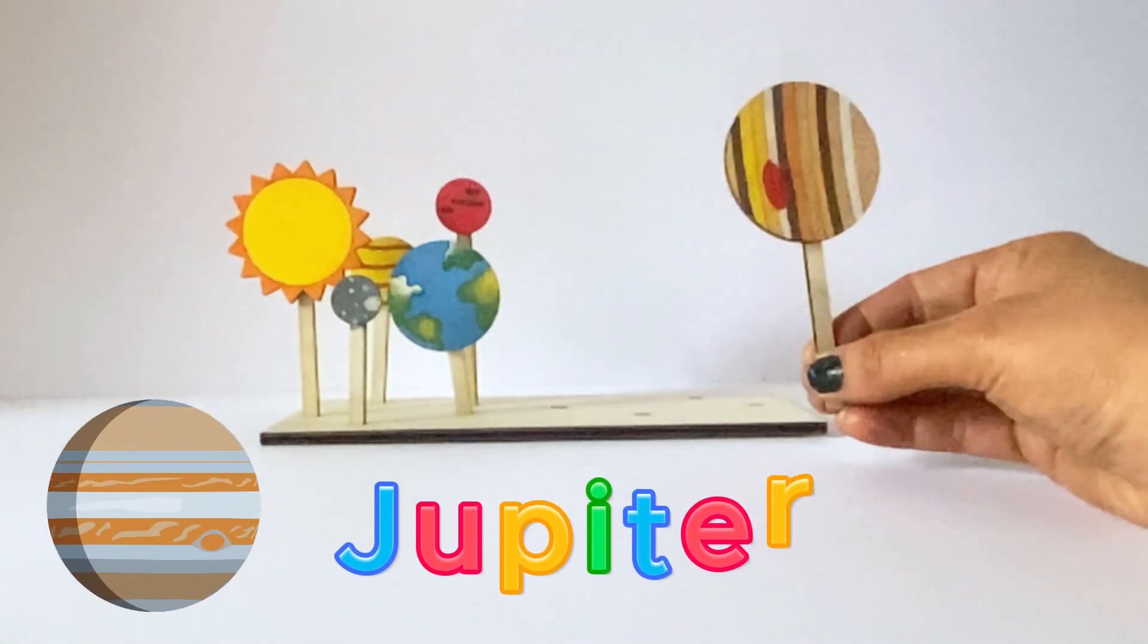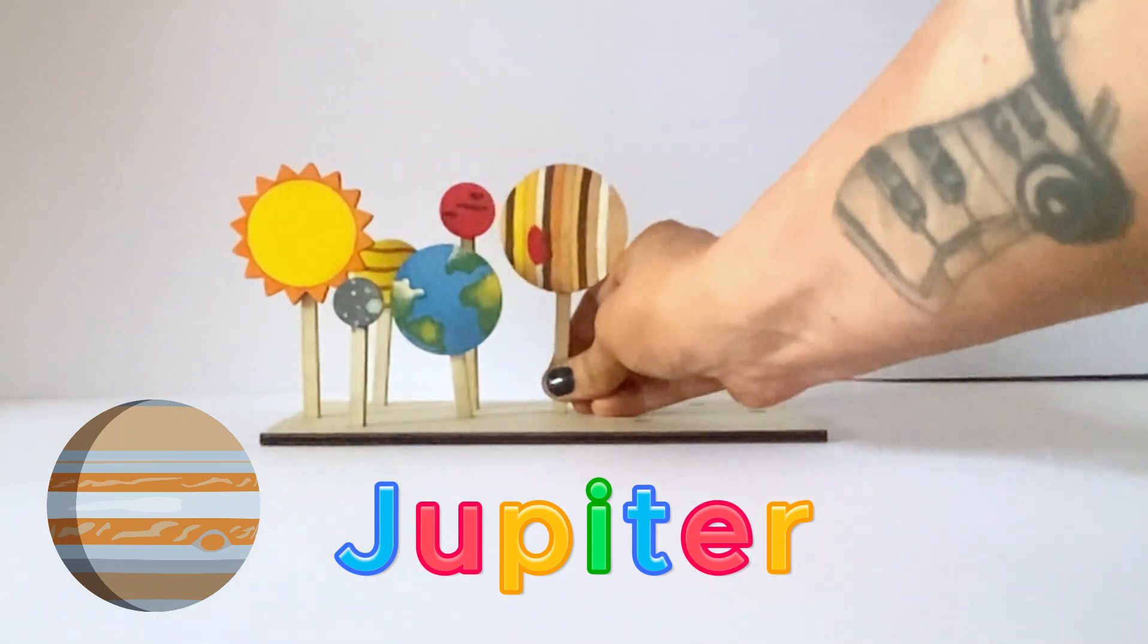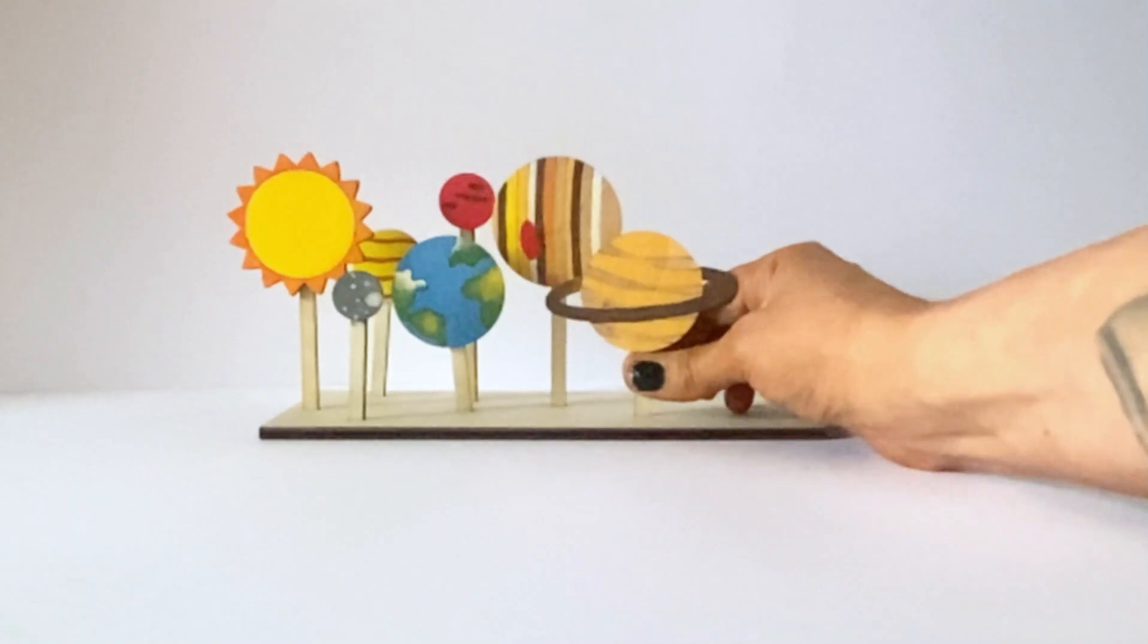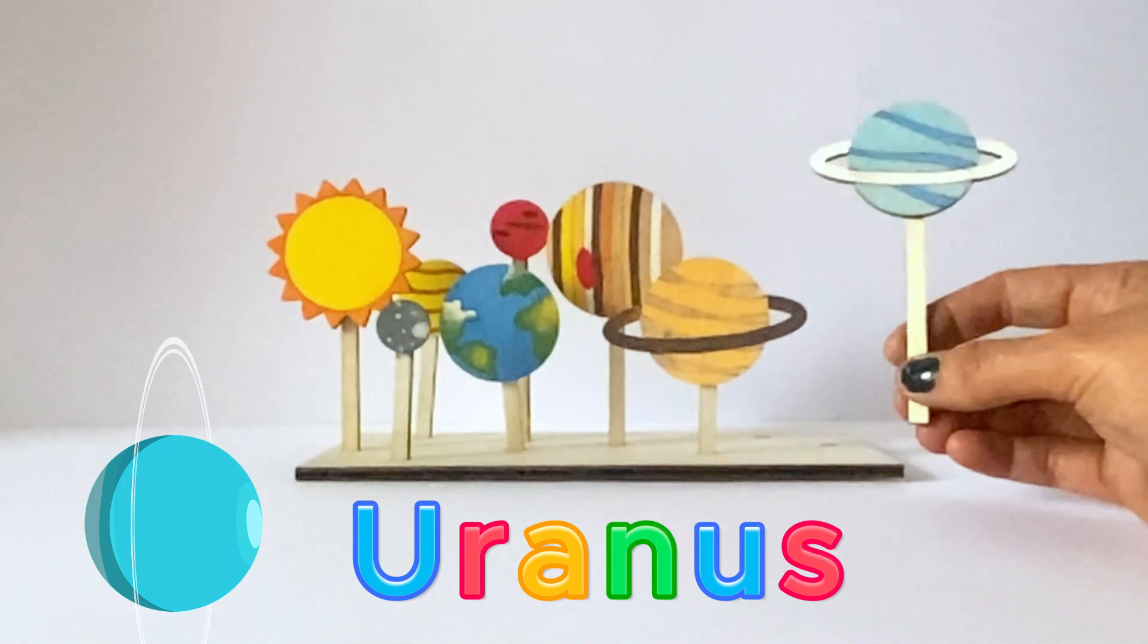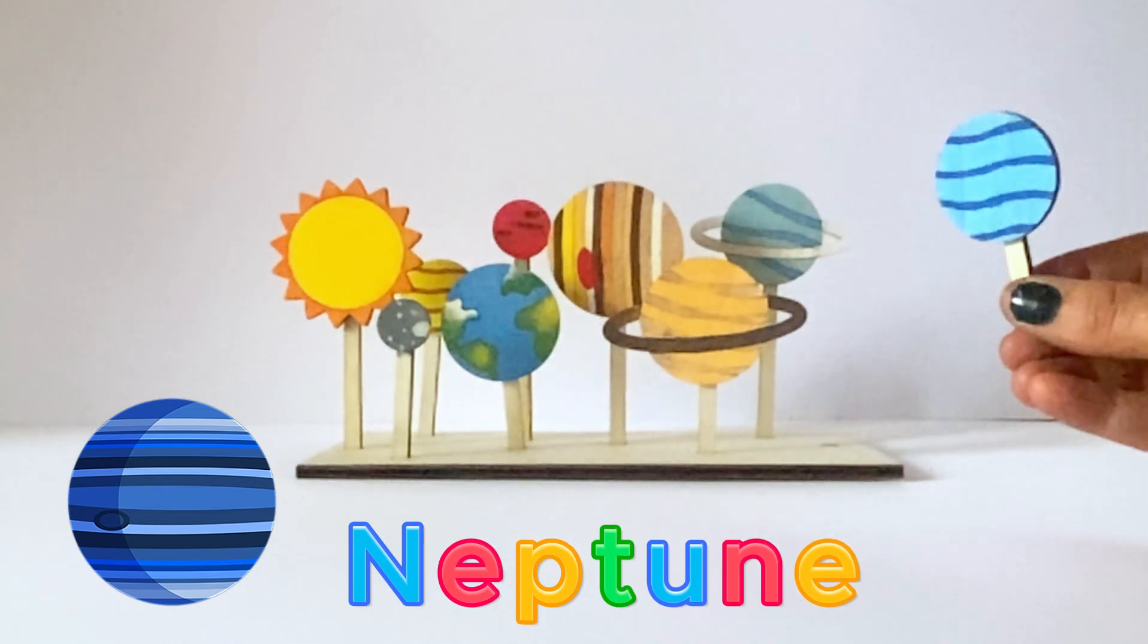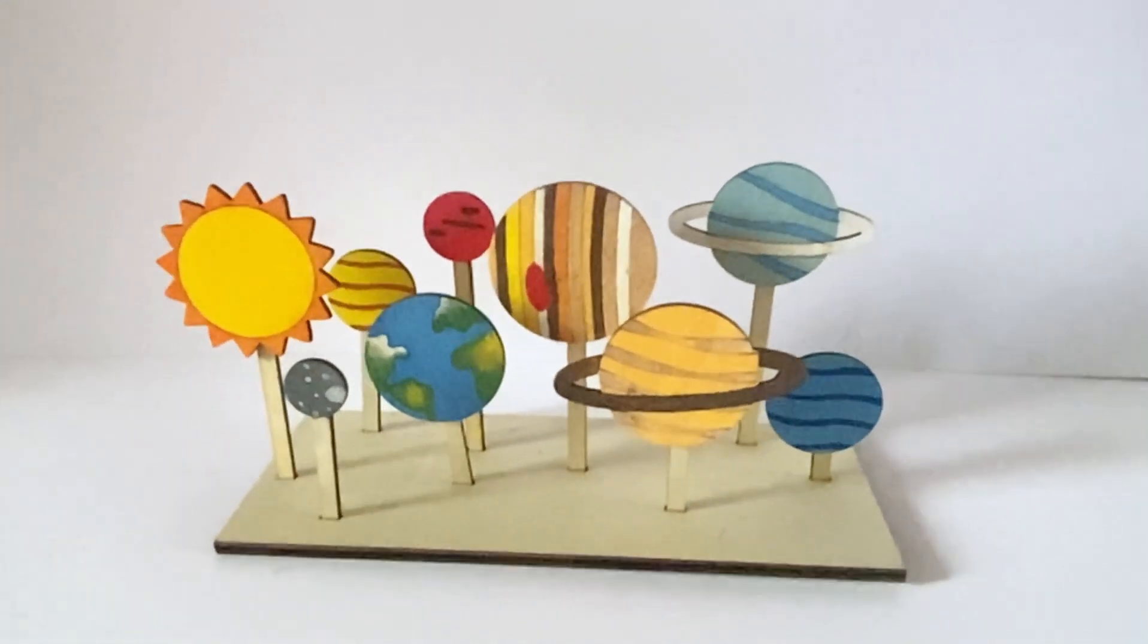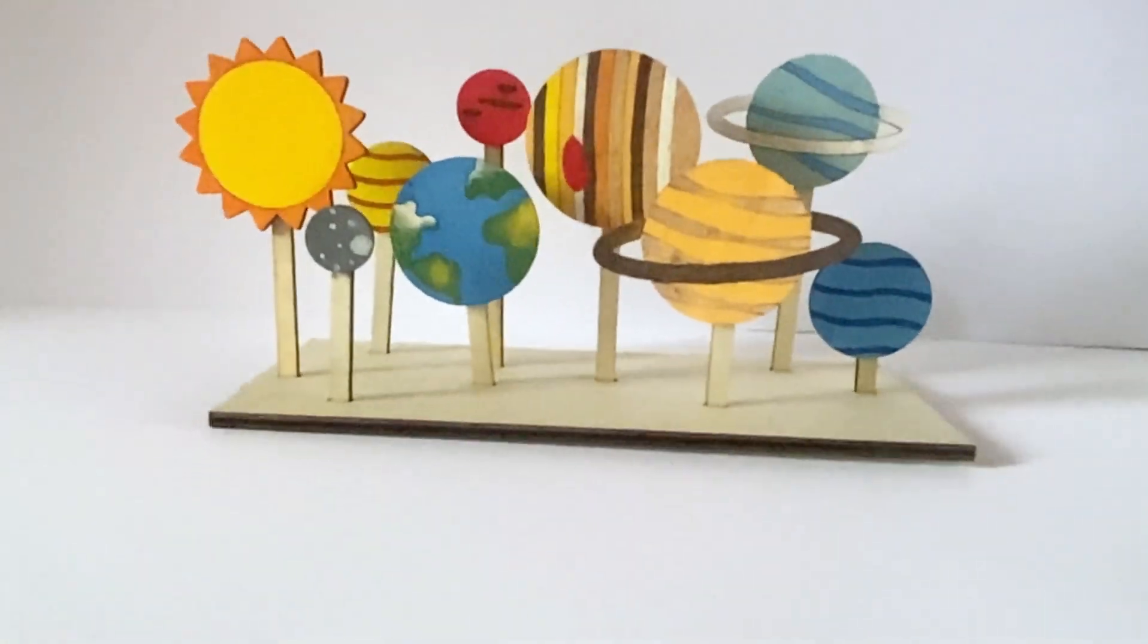The fourth planet to go in and the last of the terrestrial planets is Mars. Next, the biggest planet is going in, which is Jupiter, and the fifth planet from the Sun. The sixth planet from the Sun and the one with the big rings is Saturn. Next is Uranus, which is the seventh planet from the Sun and the coldest. And the eighth and last planet from the Sun is Neptune. And here is our finished and complete solar system model with the Sun and all of the eight planets.